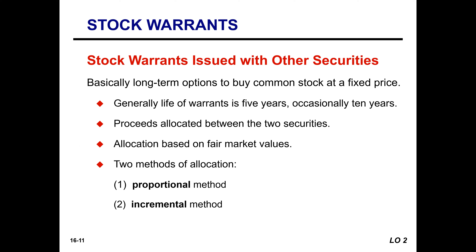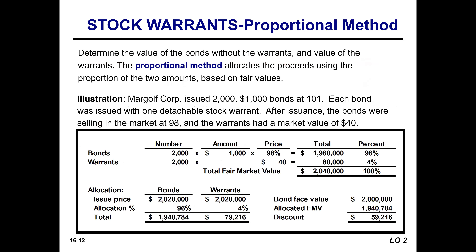When stock warrants are issued with other securities, the proceeds are allocated between the two securities based on fair market values. There are two methods: the proportional method, if we know the fair market value of all securities in the lump sum, or the incremental method, if we know only the fair market value of one of the securities. These are shown on pages 840–841 of the textbook. Here's an example of the proportional method.